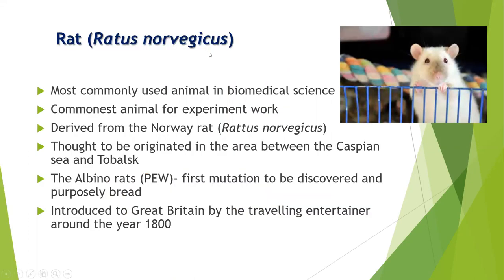The laboratory rat is also known as Rattus norvegicus. It is the most widely used animal in biomedical research. It is derived from the Norway rat and is thought to have originated in the area between the Caspian Sea and Tobas. The albino rat was the first mutation to be discovered and purposely bred, and it was introduced to Great Britain by a traveling entertainer around the year 1800.